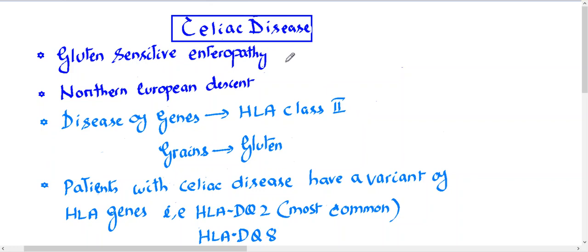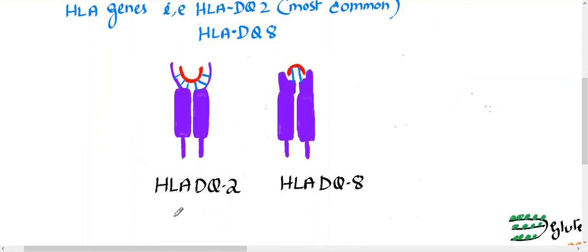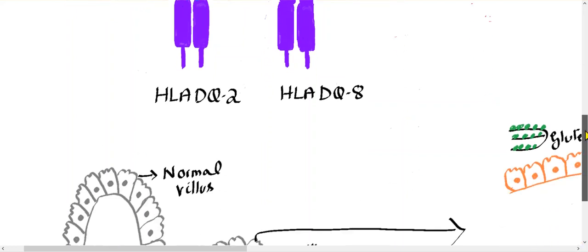Celiac disease is a gluten-sensitive enteropathy, mostly seen in Northern European descent. It is a disease of genes — that is HLA class 2 — and grains, that is gluten. Patients with celiac disease have a variant of the HLA gene: DQ2 and DQ8. DQ2 is most common and DQ8 is less common. These DQ2 and DQ8 variants bind to gliadin and present it to CD4 T cells.